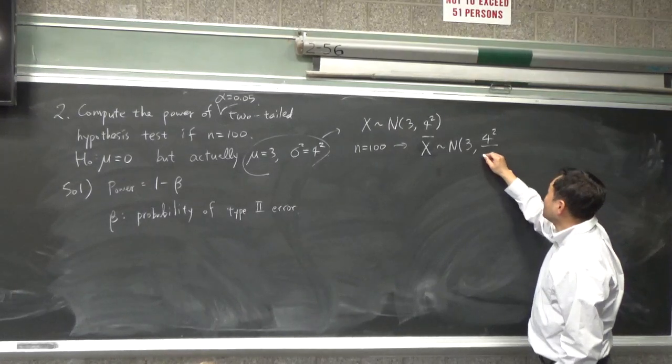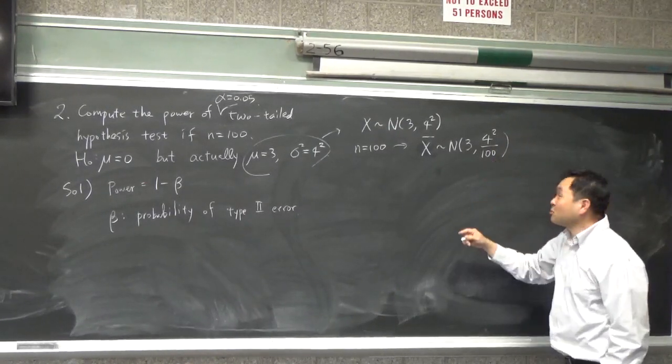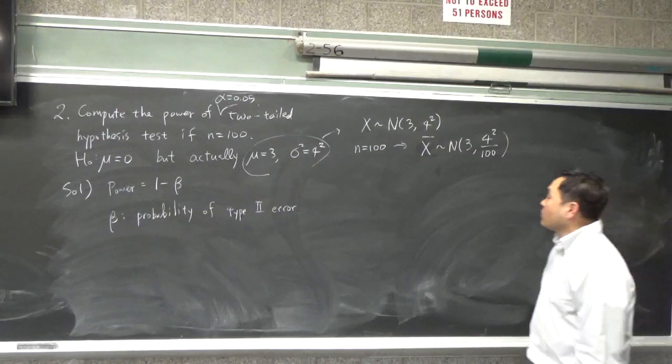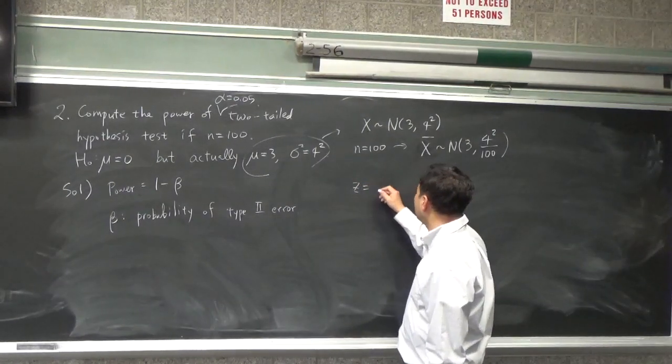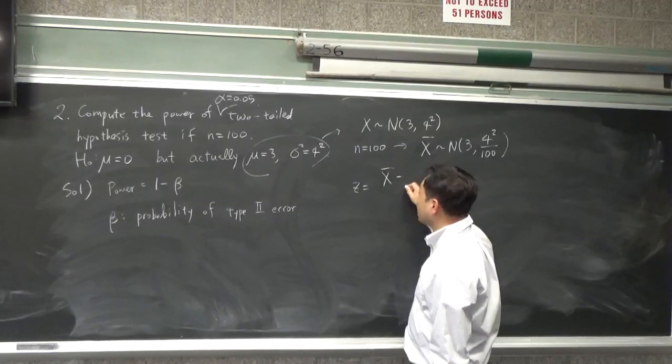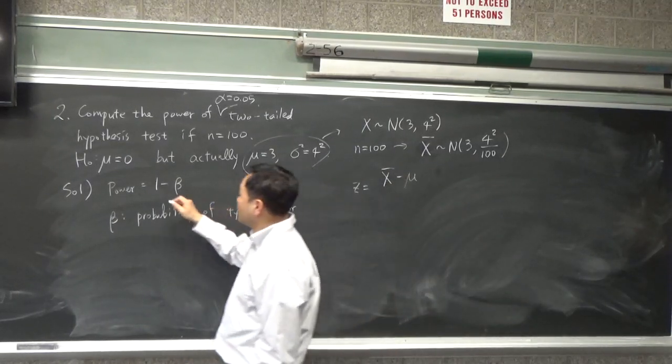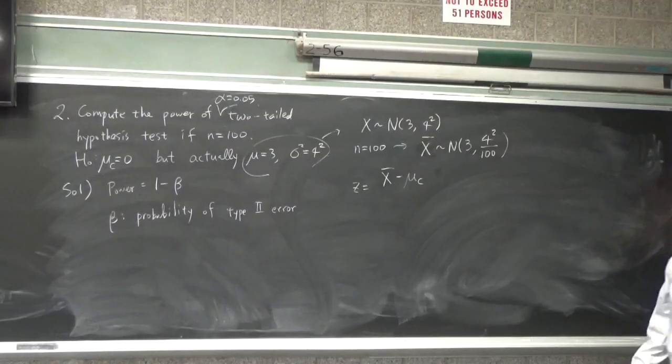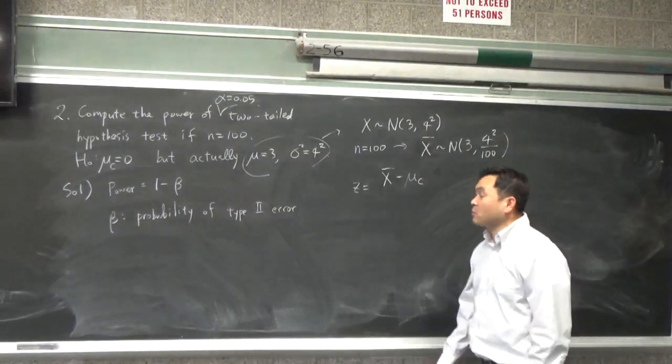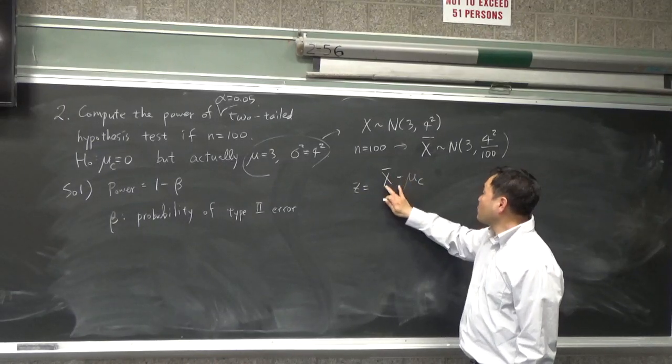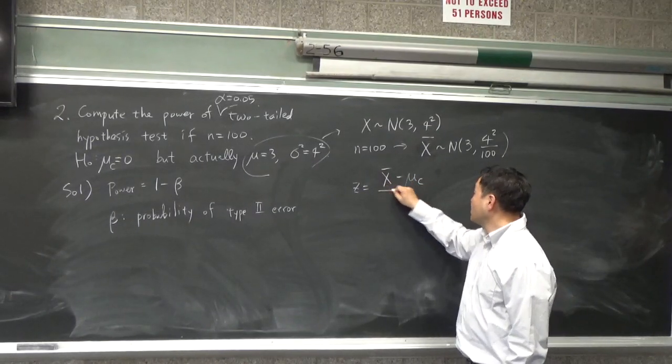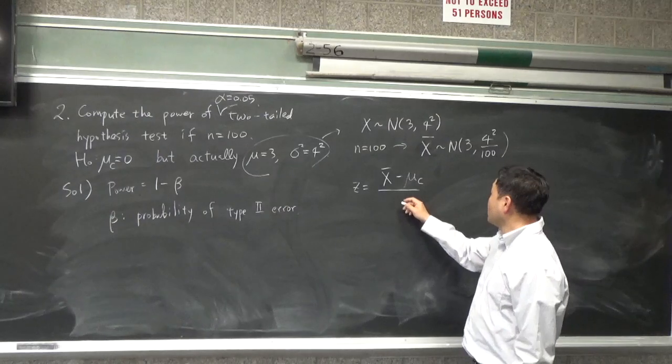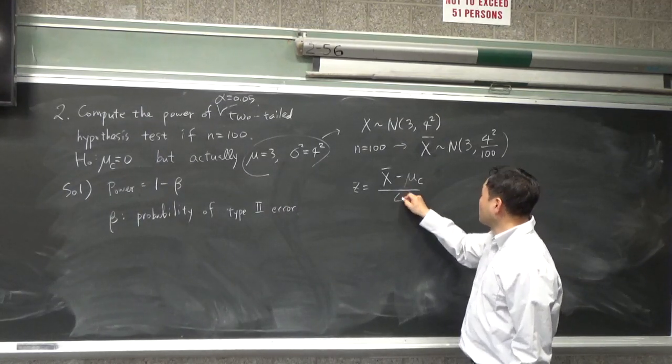And eventually this means that the standard deviation becomes 0.4. So that our z would be x bar minus the mu. I'll just put c here to say that it's mu claimed. When you do the test statistic for hypothesis testing, you're going to do x bar minus the claimed mu divided by the standard deviation, right? So it will be 4 over 10.